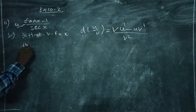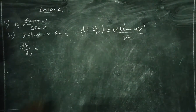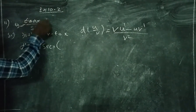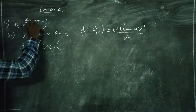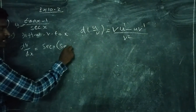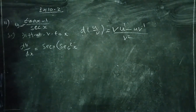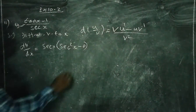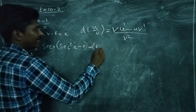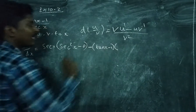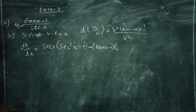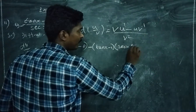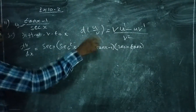So differentiating gives dy by dx. Take the denominator value sec x, then differentiate the numerator. The numerator is tan x minus 1. Differentiating tan x gives sec squared x, and differentiating the constant minus 1 gives 0. Then minus the numerator tan x minus 1, times the derivative of the denominator sec x, which is sec x tan x.